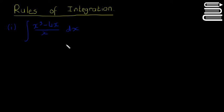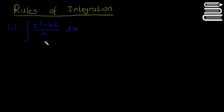This is just going to be a quick video where we go through some examples of integration using the rules we learned in the last video. With this question, we can't integrate it straight away. If we were differentiating it, we'd probably use the quotient rule because there's a top and a bottom, but there's no quotient rule, chain rule, or product rule for integration. So you have to make sure it's as simple as possible.